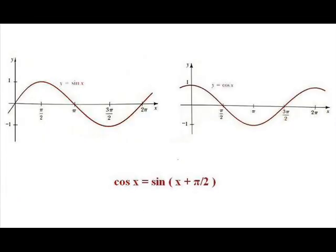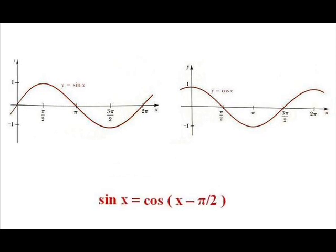Note also that shifting the graph of the sine function pi over 2 units to the left produces the graph of the cosine function. So cosine of x equals sine of x plus pi over 2. And similarly, the graph of the sine function is produced when the graph of the cosine function is shifted pi over 2 units to the right, because of the identity sine of x equals cosine of x minus pi over 2.